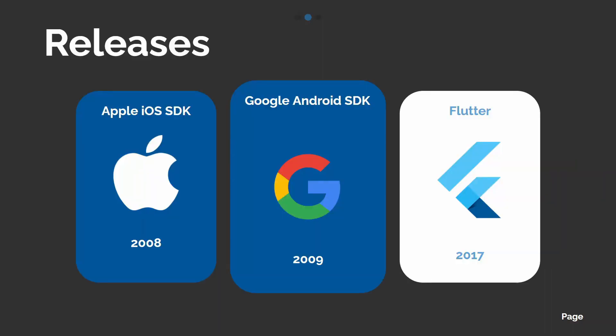It all started with iOS in 2008 — there was the iPhone, and Apple made iOS for iPhones. Then, after one year, there was Android, and it was hard for people to build two separate codebases for both platforms. That's why React Native, Ionic, and other frameworks emerged to let you write just one code and run it on both platforms.